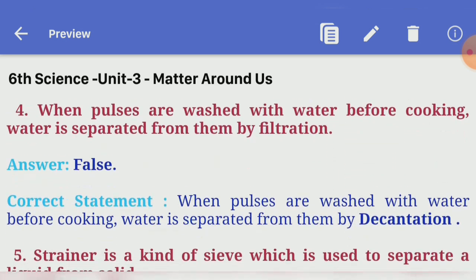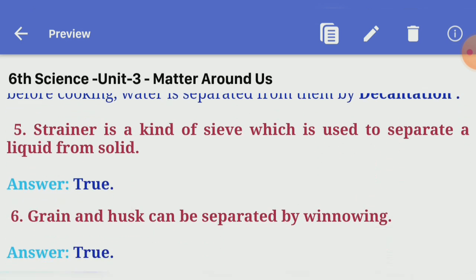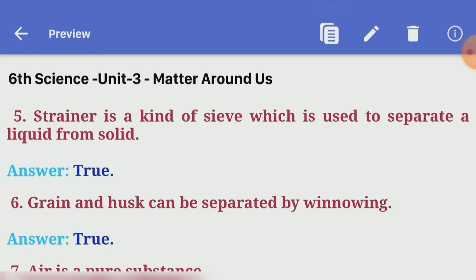Fourth one: when pulses are washed with water before cooking, water is separated from them by filtration. Answer — false. Correct statement: water is separated from them by decantation. Fifth one: a strainer is a kind of sieve which is used to separate a liquid from solid. Answer — true. Sixth one: grain and husk can be separated by winnowing. Answer — true.